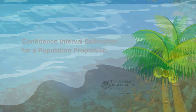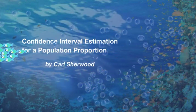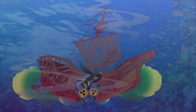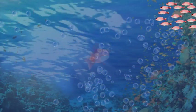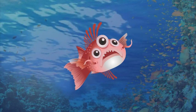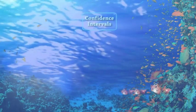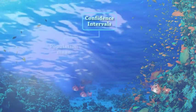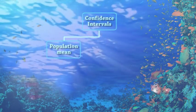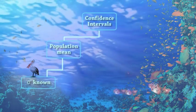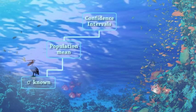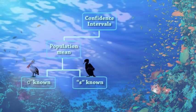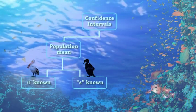So far, the two confidence intervals we've considered have both involved the population mean. The first relied on the fact that we knew sigma, the population standard deviation. Then we looked at a problem when the population standard deviation was unknown and we only had the sample standard deviation. So now, moving away from the mean, let's consider trying to find confidence intervals for the population proportion.